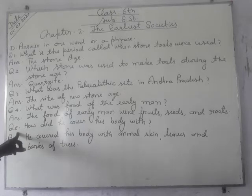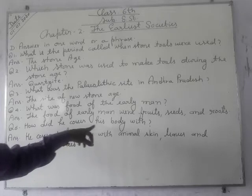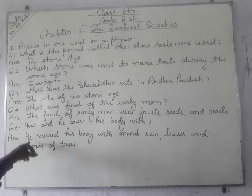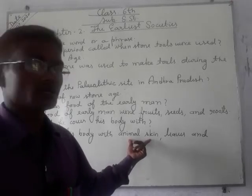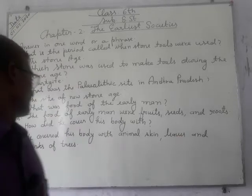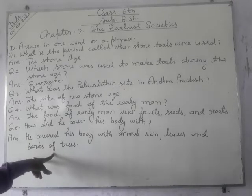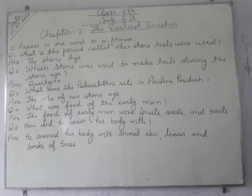Question number five: how did he cover his body? Early man covered his body with animal skin — the skin of animals, leaves, and bark of trees.